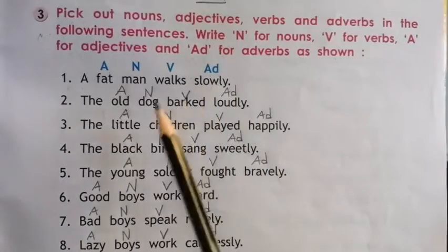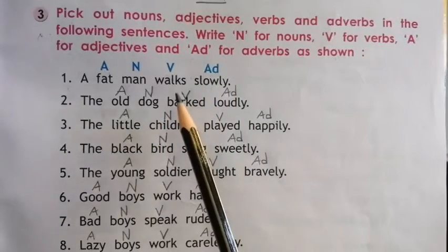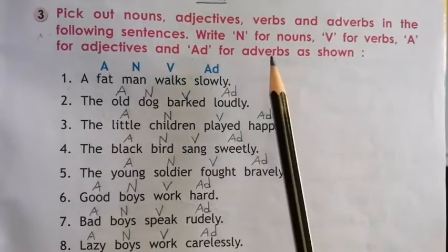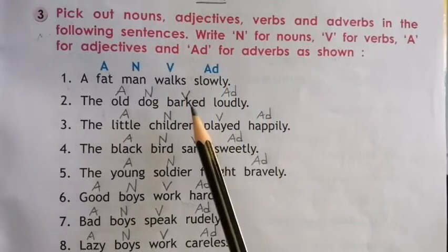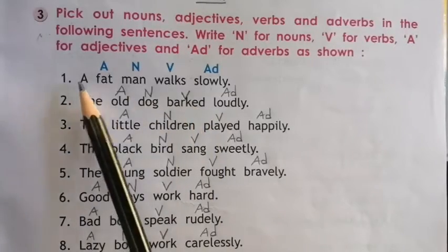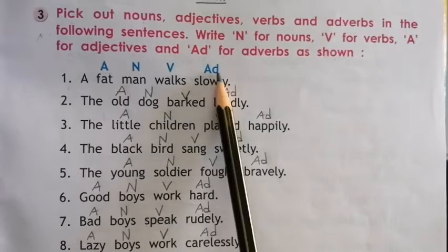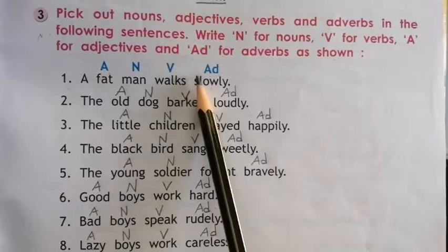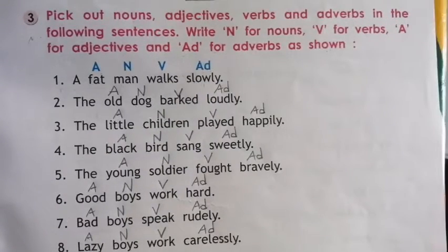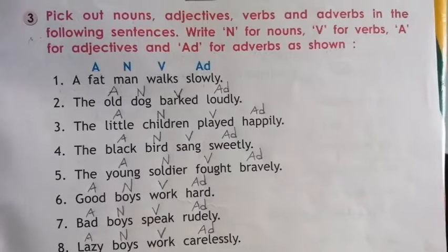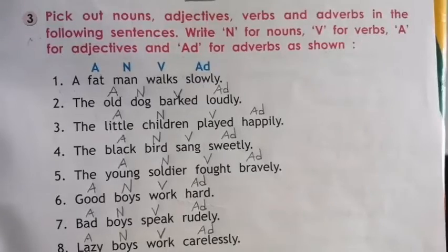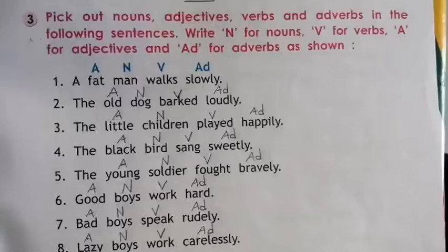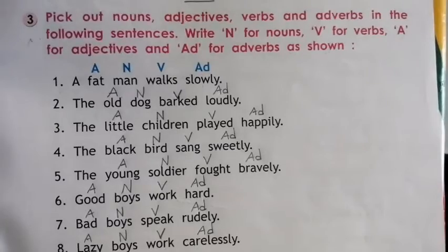What we have to do here? Here the sentences are given, and we need to find out which is noun, adjective, verb and adverb — identify them. An example is given here. Before we start, let me revise: noun means naming words, adjective means describing words, verbs means doing words, and adverbs means words which add something to the meaning of verbs and tell us how, where and when an action is done.